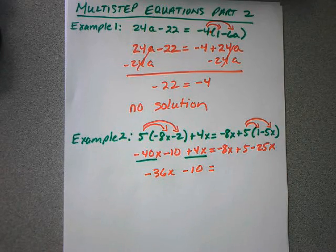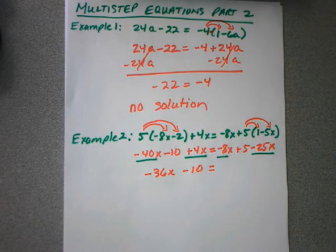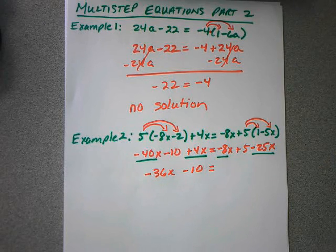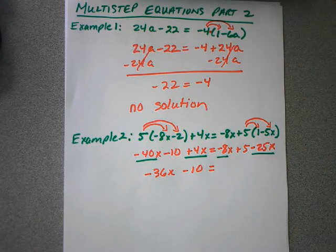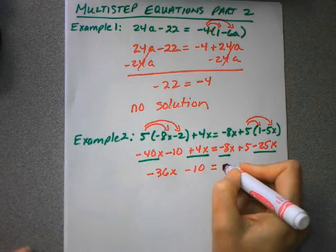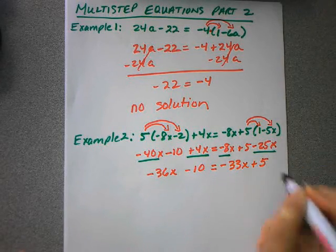On the other side, I have two variable terms which I can combine. And when I combine those, I get negative 33, because negative 8 minus 25, since they have the same sign, I'm going to add them and they're going to become a bigger negative. So this is negative 33x plus 5.